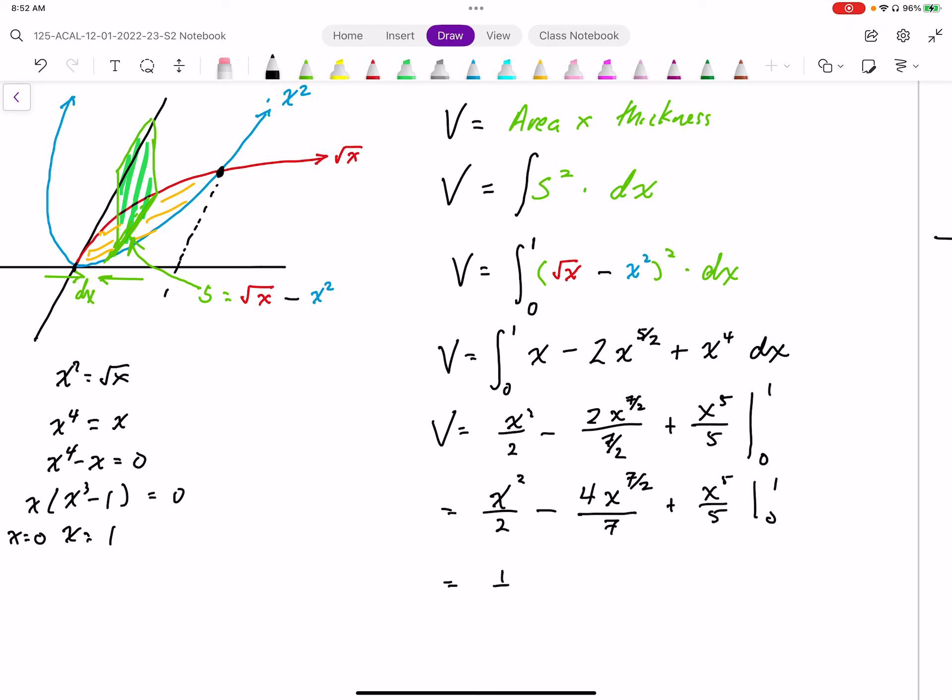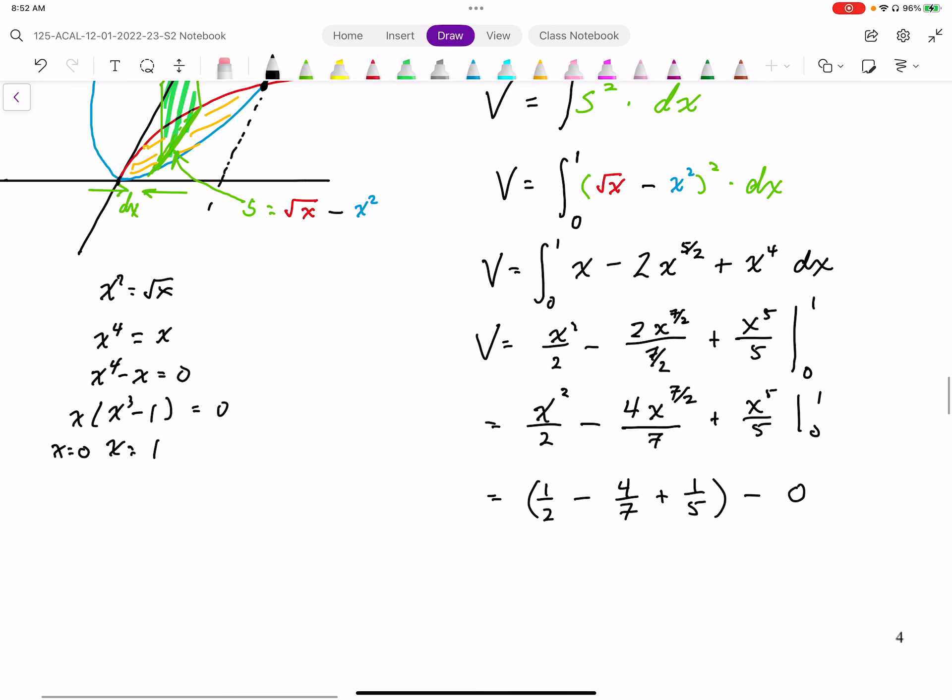Evaluating this integral, I end up with 1 half minus 4 over 7 plus 1 over 5 minus, when I substitute in 0, I get 0. So evaluating this, the common denominator is going to be 70. So it's going to be 35 over 70 minus 40 over 70 plus 14 over 70.